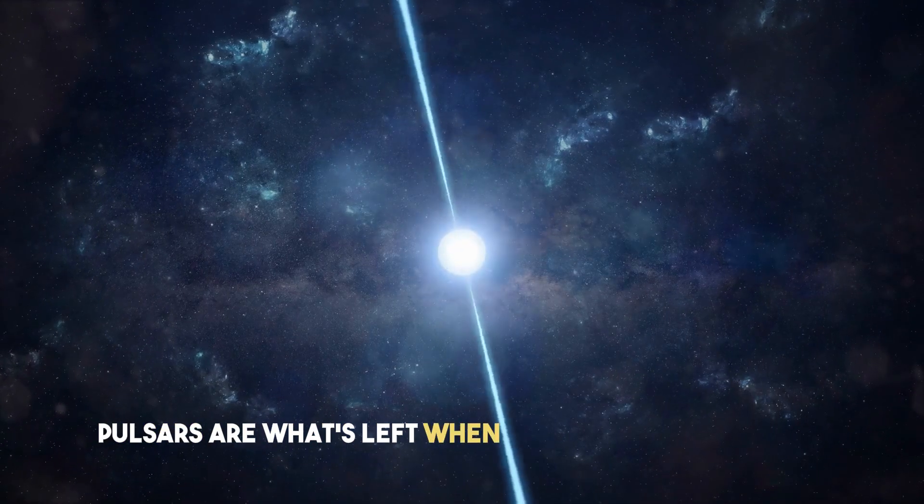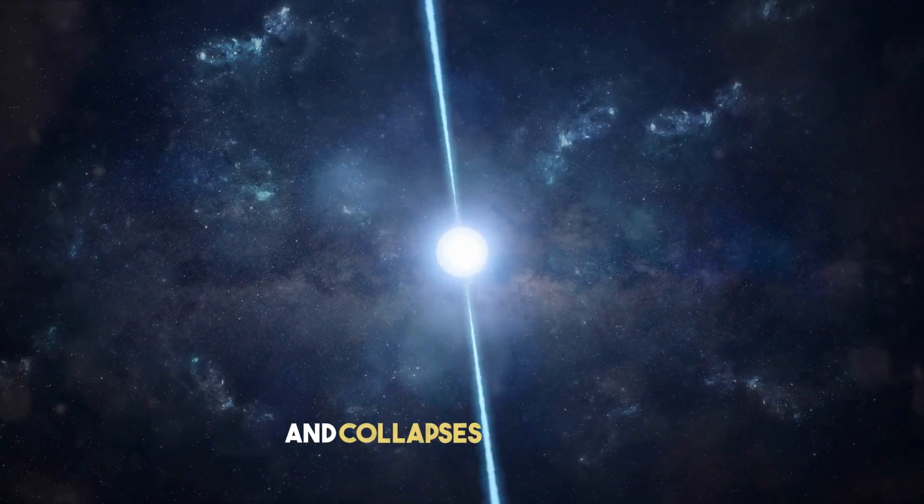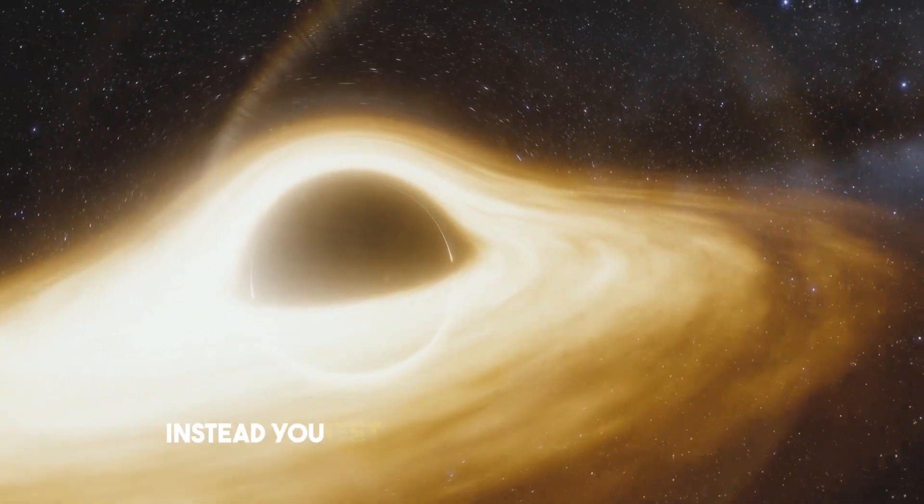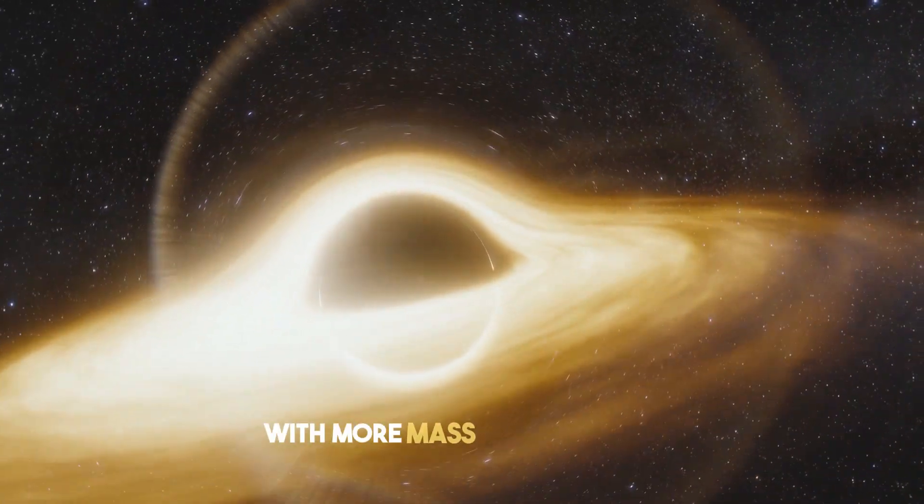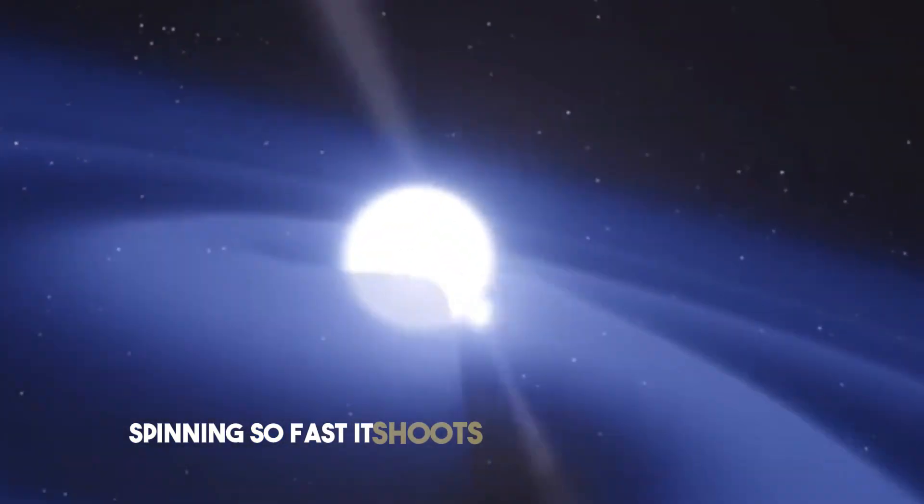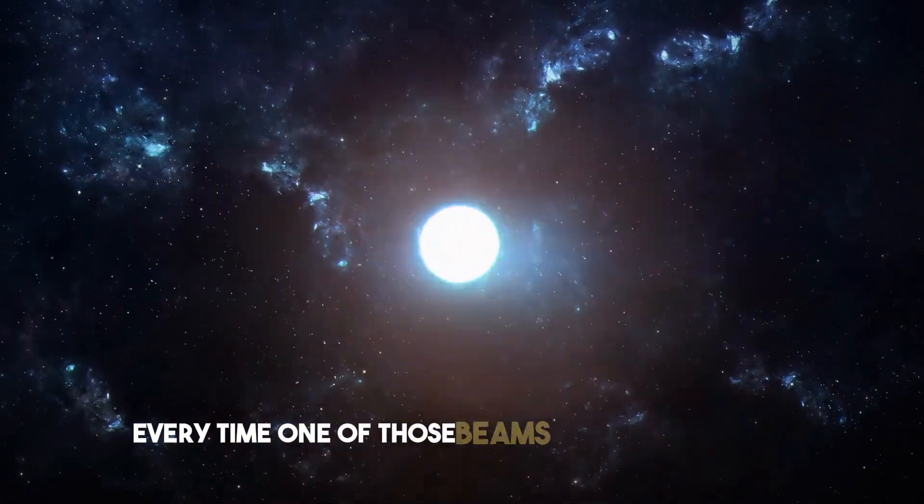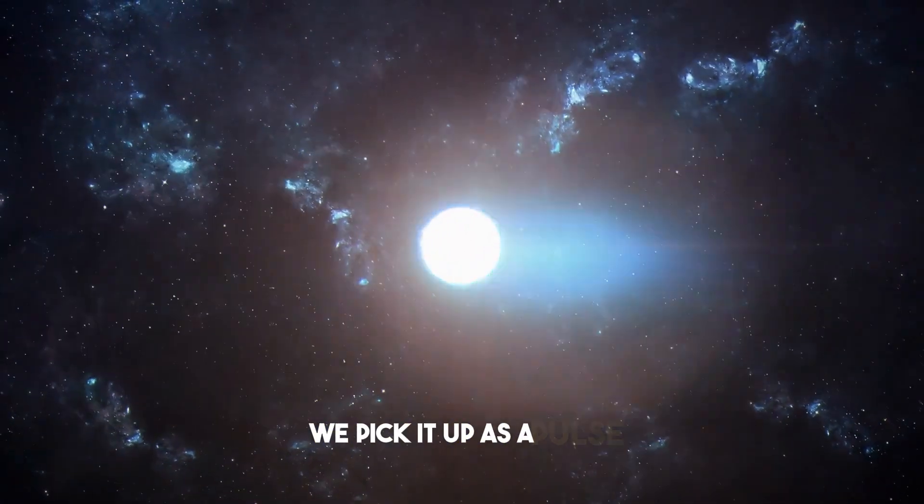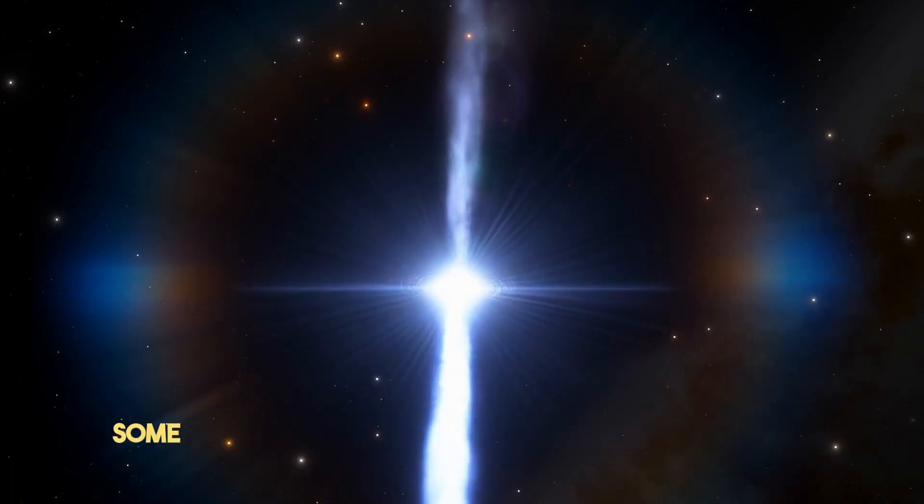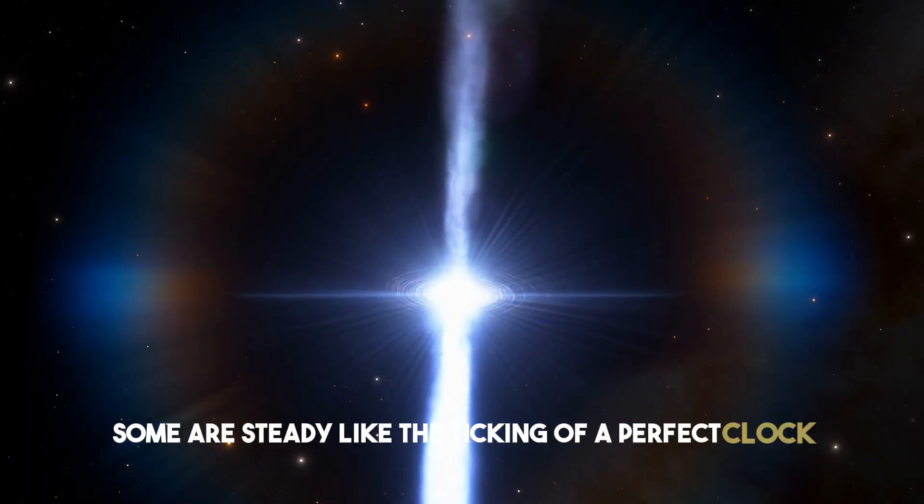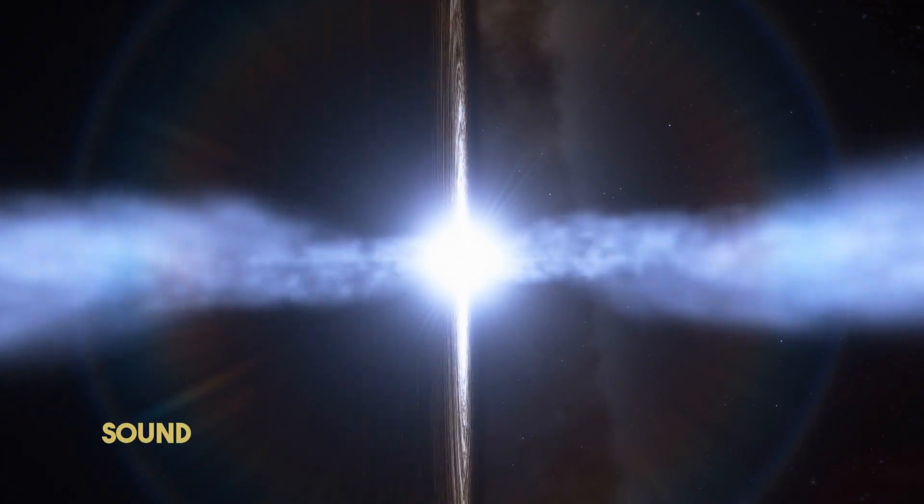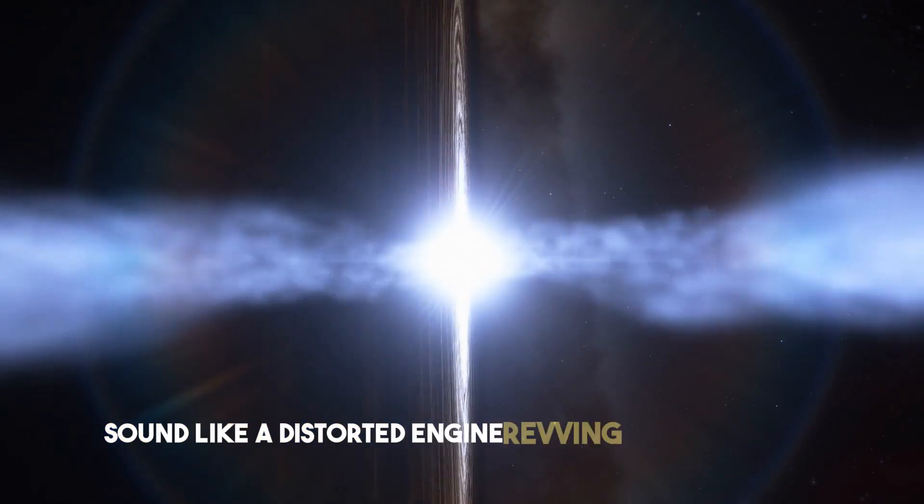Pulsars are what's left when a massive star explodes and collapses in on itself, but not enough to become a black hole. Instead, you get something the size of a city with more mass than our sun, spinning so fast it shoots out beams of radiation like cosmic lighthouses. Every time one of those beams sweeps past Earth, we pick it up as a pulse, which is how they got their name. Some are steady, like the ticking of a perfect clock. Others, like the Vela Pulsar, sound like a distorted engine revving in the distance.